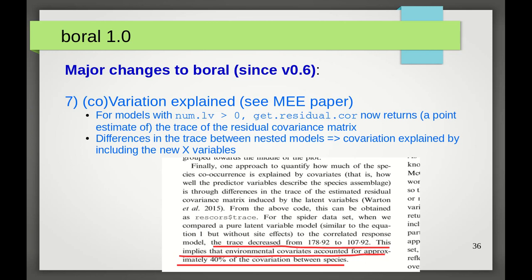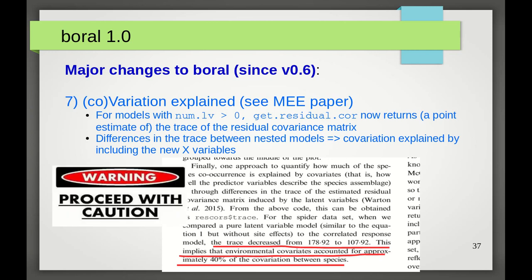Number seven. Variation or co-variation explained. This is still an open statistical problem, but there is now a half-baked solution to trying to identify, or trying to quantify, the amount of species co-variation explained by one or more x variables. Basically, for models with latent variables included, i.e. num.lv greater than zero, the get.residual.cor function now returns an estimate of the trace of the residual covariance matrix. And differences in a trace between models with different numbers of x variables should, in principle, be an indication of how much co-variation is explained by the new x variables. Again, please read the methods in ecology and evolution paper for an example. And please also proceed with caution on using this trace. It's not perfect, but honestly, I don't know of an ideal r-squared type number for such models at this point.